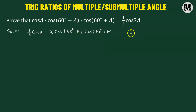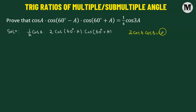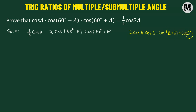So let's talk about that formula first: if we have 2 times cosine of angle A times cosine of angle B, that's given by cosine of (A plus B) added to cosine of (A minus B).